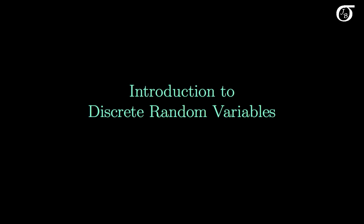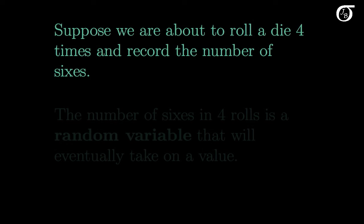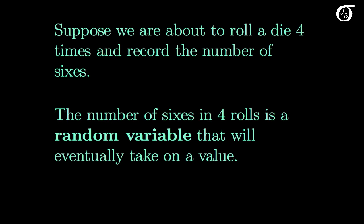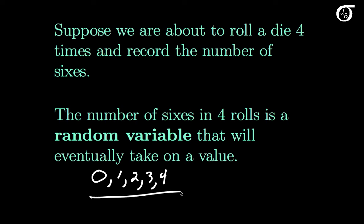Let's take a look at an introduction to discrete random variables. Suppose we're about to roll a die four times and record the number of sixes. The number of sixes in those four rolls is a random variable that will eventually take on a value. We know we're either going to get zero, one, two, three, or four sixes. We simply don't know which one of these five values is going to happen, and these five possibilities are going to have different probabilities of occurring.